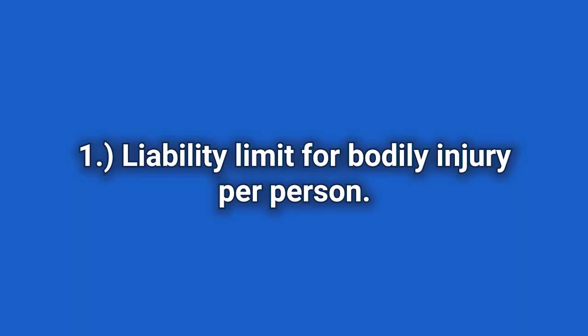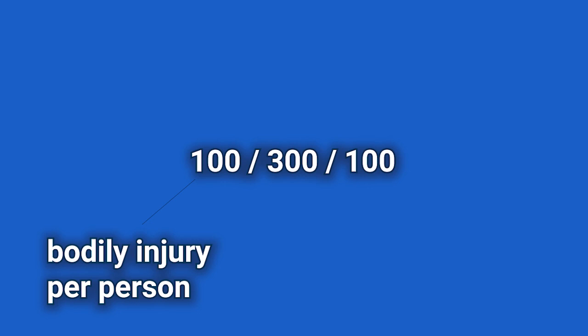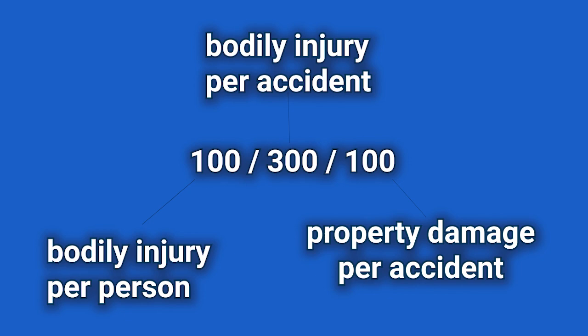Let's break that down. The first number — 100,000 — is the liability limit for bodily injury per person. The second number is bodily injury per accident, covering all the different people involved in that one accident. The third number is for property damage, and that is a per-accident limit. So with 100/300/100, that's 100,000 bodily injury per person, 300,000 bodily injury per accident, and 100,000 property damage per accident.